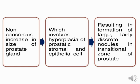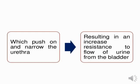Further, this leads to pushing and narrowing of the urethra. The enlargement of the prostate gland forces pressure on the urethra, causing narrowing. This results in increased resistance to the flow of urine from the bladder, meaning the person may have problems with urine excretion due to urethral narrowing. That is all about the pathophysiology of BPH.